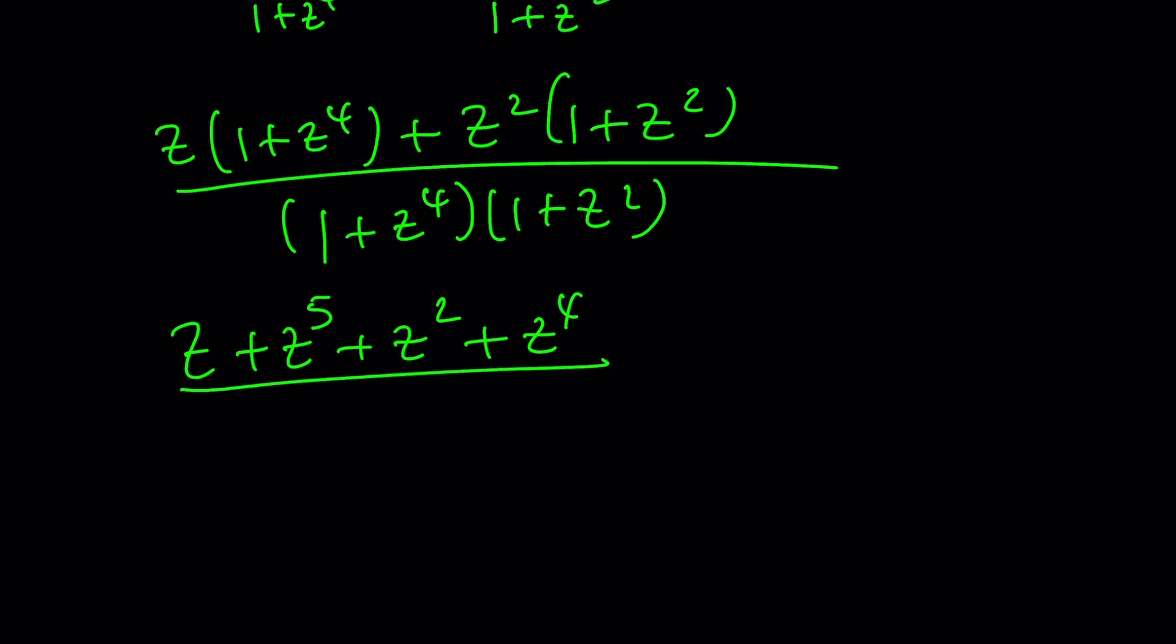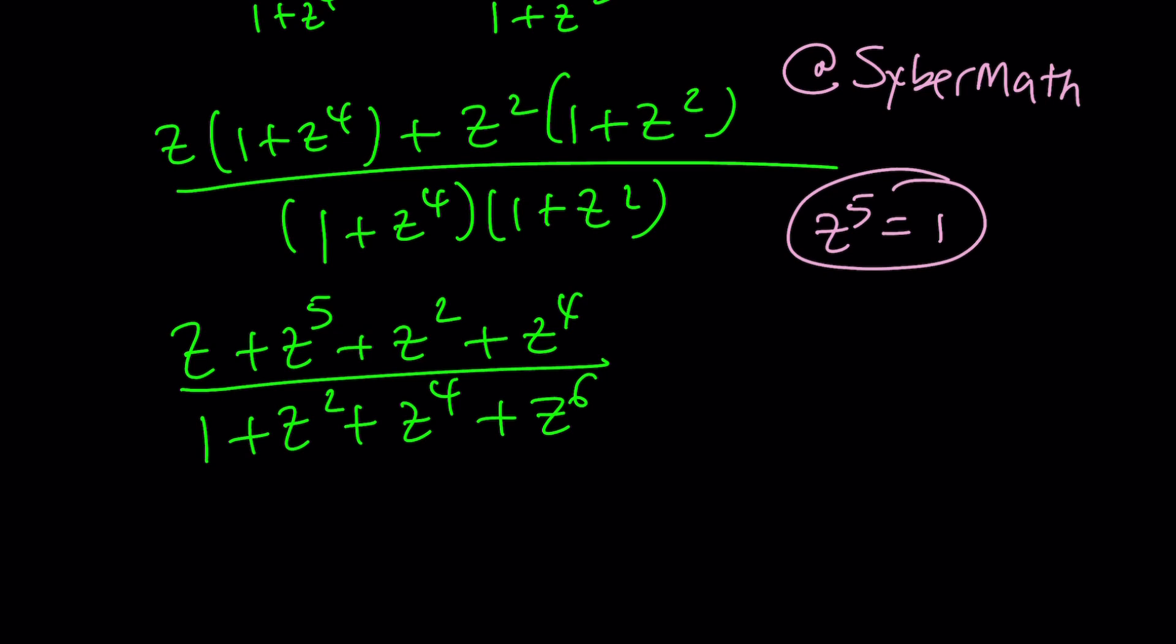We get z plus z to the fifth plus z squared plus z to the fourth. What about the denominator? Let's distribute as well: 1 plus z squared plus z to the fourth plus z to the sixth. Uh-oh, this is interesting. Are we going to use the value of z? Nope. We're only going to use the fact that z to the fifth equals 1. But remember, z does not equal 1, but z to the fifth equals 1, which is weird from a real perspective. But this channel is all about complex numbers. If you're new to complex numbers, check out my lecture videos and also check out CyberMath if you like algebra, number theory, and trigonometry problems.